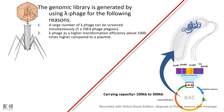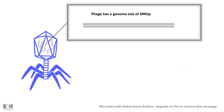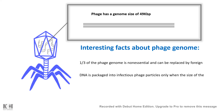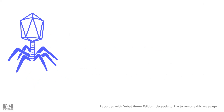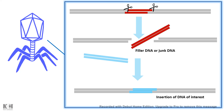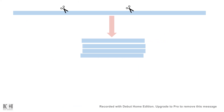In lambda phage vectors, their genome is 49 kb pairs, and one interesting fact is that one third of their genome is essentially non-essential — they don't need that region. That genomic region can be replaced with our gene or DNA sequence of interest. We cut out this stuffer fragment and insert our DNA of interest, creating several thousand plaques from these lambda phage vectors.